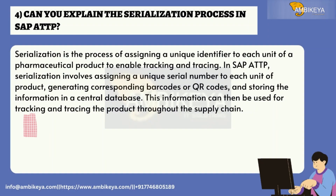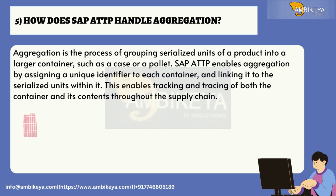Question number four: can you explain the serialization process in SAP ATTP? Serialization is the process of assigning a unique identifier to each unit of a pharmaceutical product to enable tracking and tracing. In SAP ATTP, serialization involves assigning a unique serial number to each unit of product, generating corresponding barcodes or QR codes, and storing the information in a central database. This information can then be used for tracking and tracing the product throughout the supply chain.